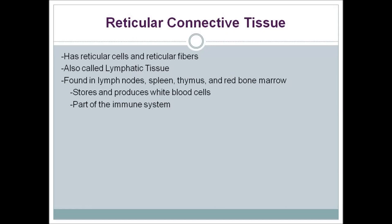The third type of fibrous connective tissue is reticular connective tissue. It has reticular cells and reticular fibers, and is also called lymphatic tissue. It is found in lymph nodes, the spleen, the thymus, and red bone marrow.